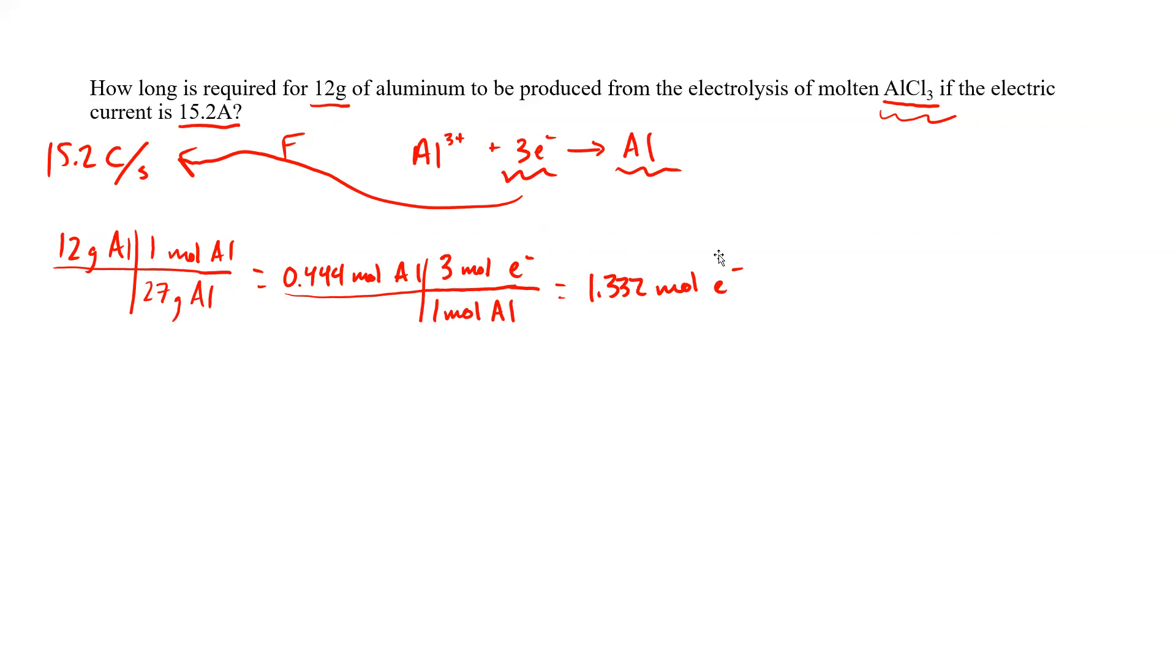Now with that in mind, what we're going to move on to is 1.332 moles of electrons. Let's relate it to Faraday's constant. Faraday's constant is 96,485 coulombs per mole of electrons. So 1 mole of electrons is related to 96,485 coulombs.